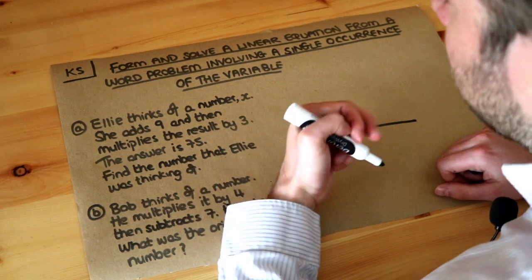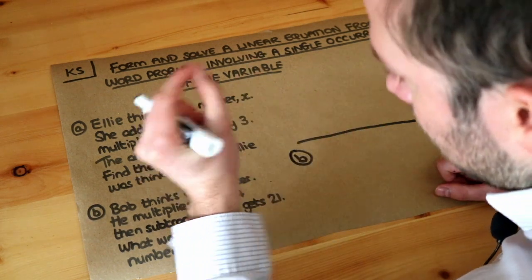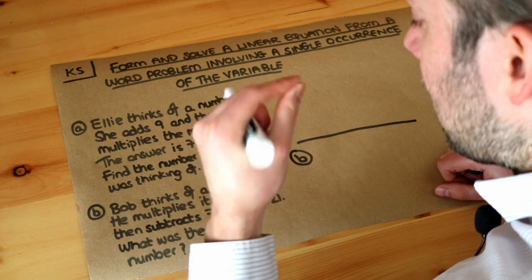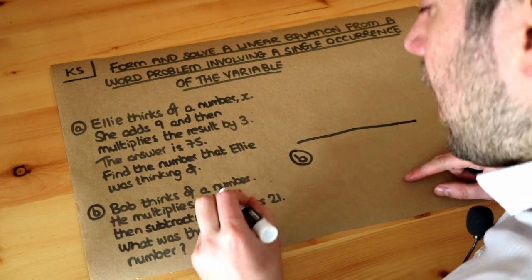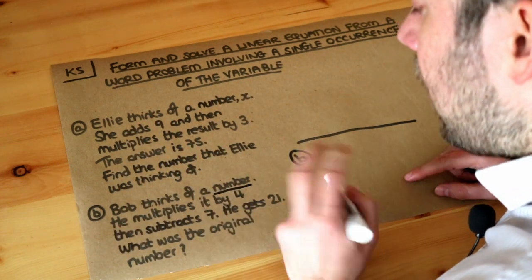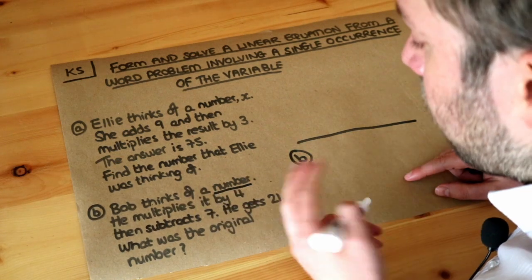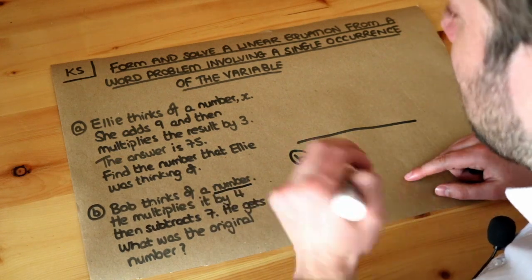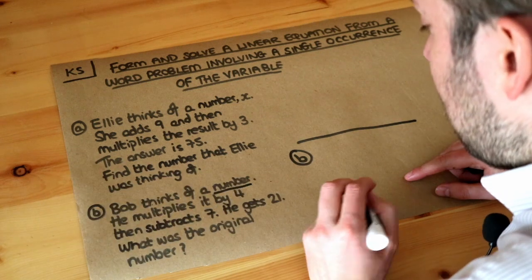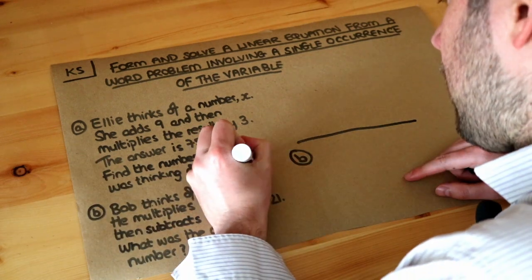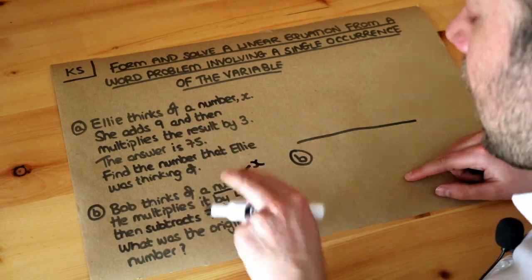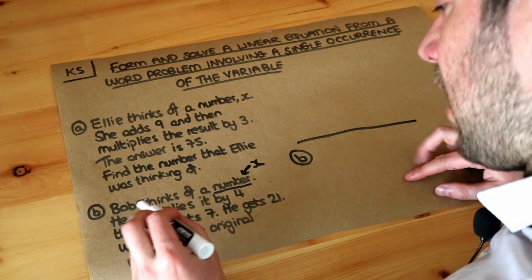Remember, the whole point of algebra is that we use letters known as variables to represent unknown values. What is the unknown value here? He thinks of some number that's unknown, and we want to work out what that original number is. We can use a letter, let's say x, to represent that number, and then turn that into an equation.